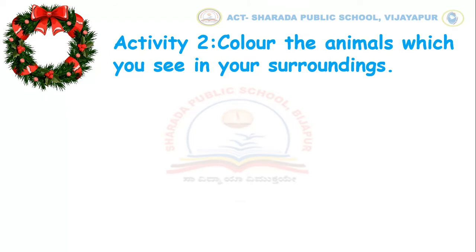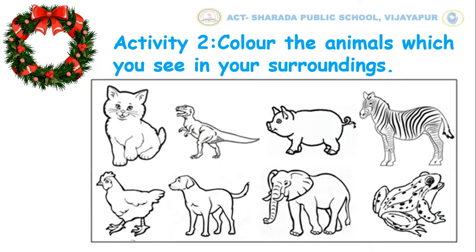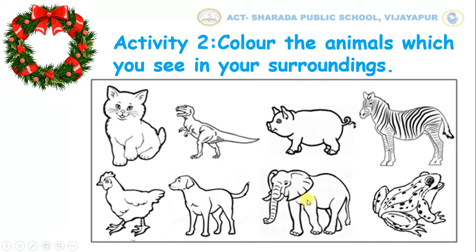Children, let us read the animals. A cat, a dinosaur, a pig, a zebra. Repeat after me: a hen, a dog, an elephant, a frog.